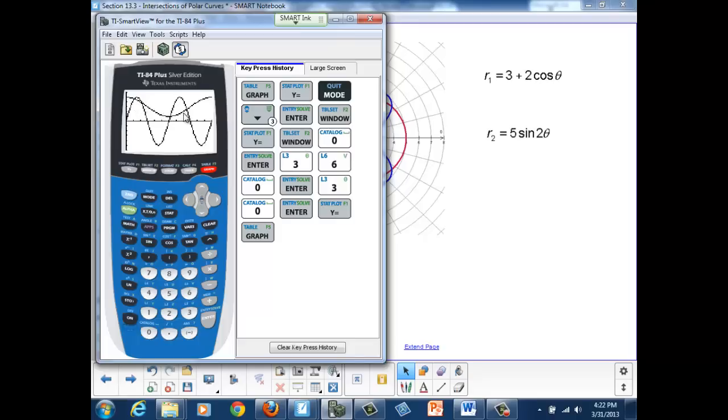In fact, we have one, two, three, four true intersections between zero and 360 degrees. To find those values, we'll use the Calc menu.